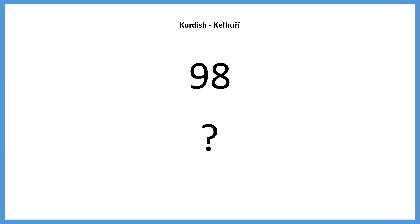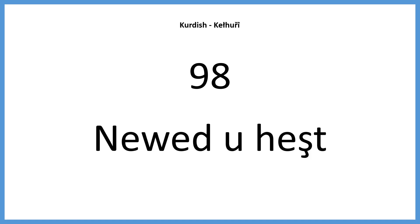Here is our final example. What is 98 in Kurdish? You may pause here. 98 would be: newed u hesht. Newed — 90. U — and. Hesht — 8. Newed u hesht. Now that we have practiced numbers up to a hundred, and we know that hundred is sed, let's look at multiples of a hundred.